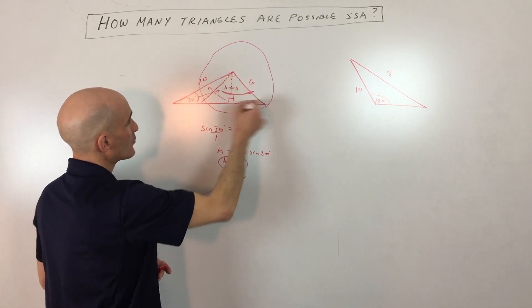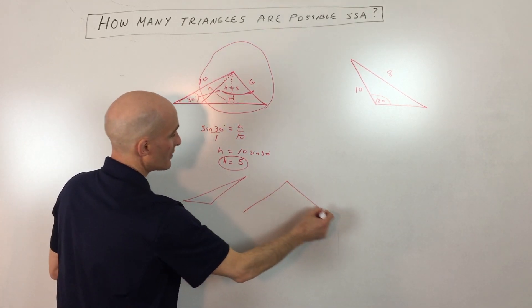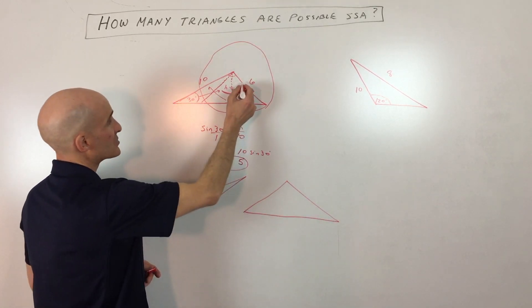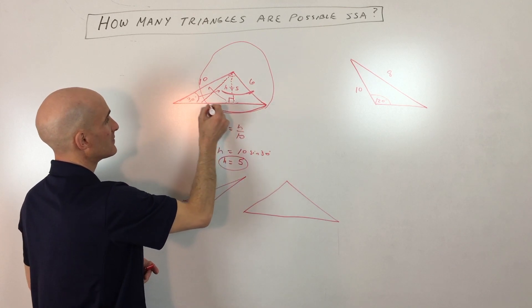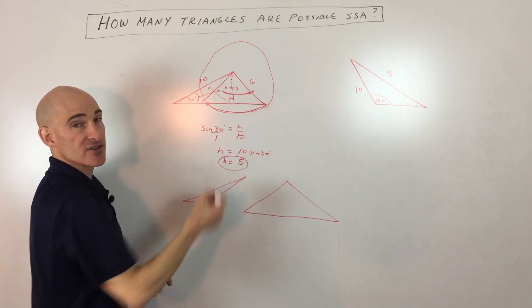And then we've got the original triangle that I drew, which looks something like this. Again, it's just because we're rotating this side.